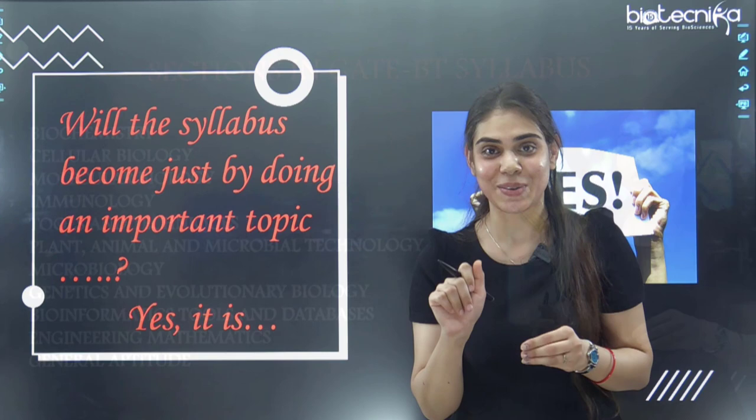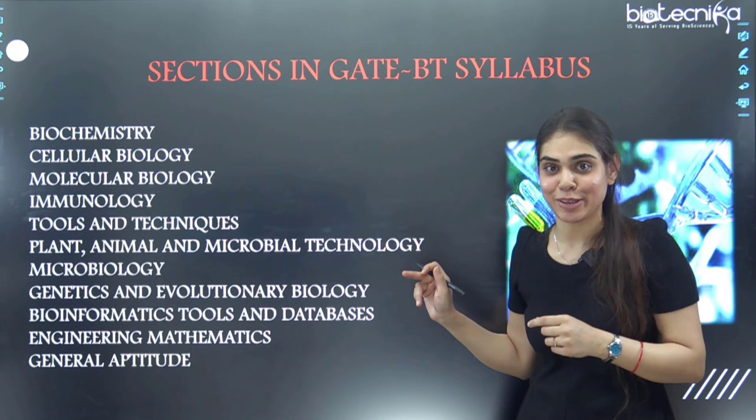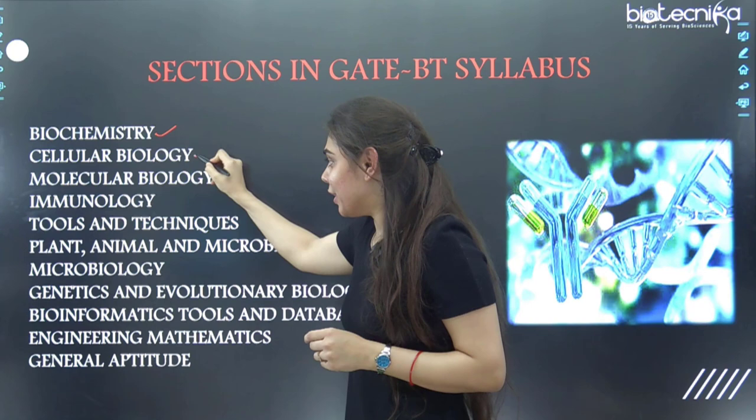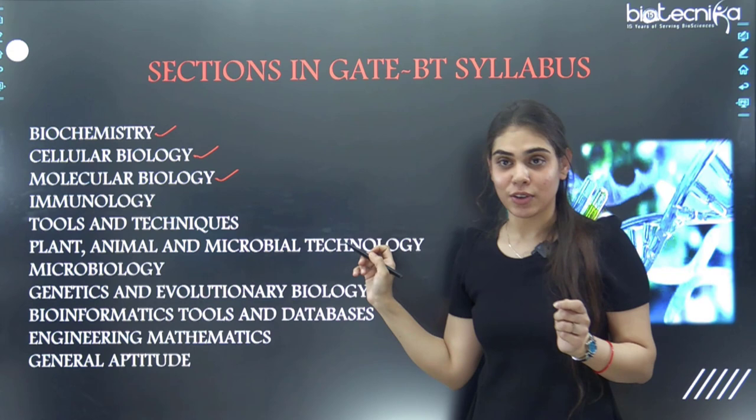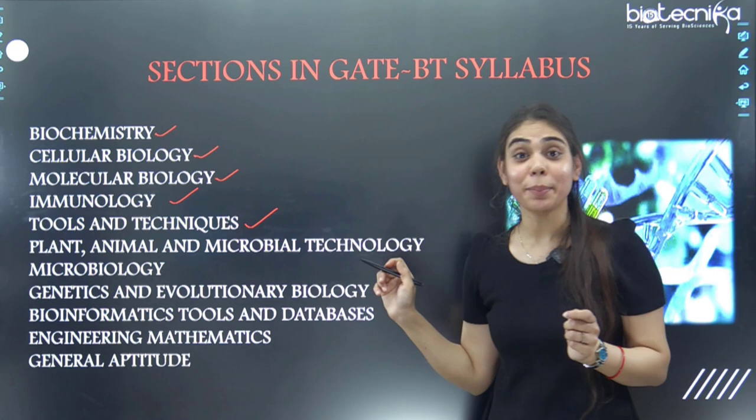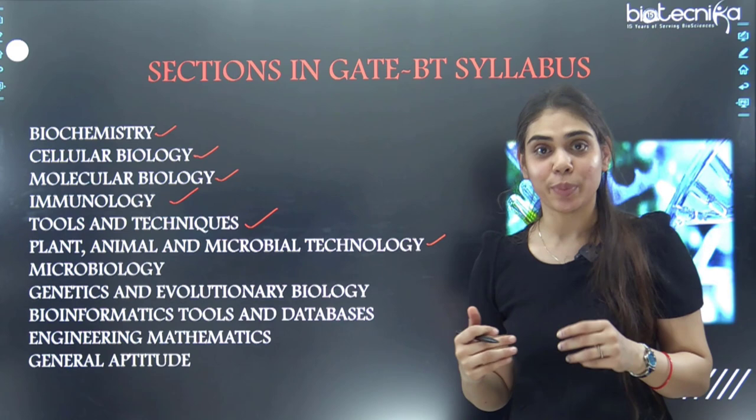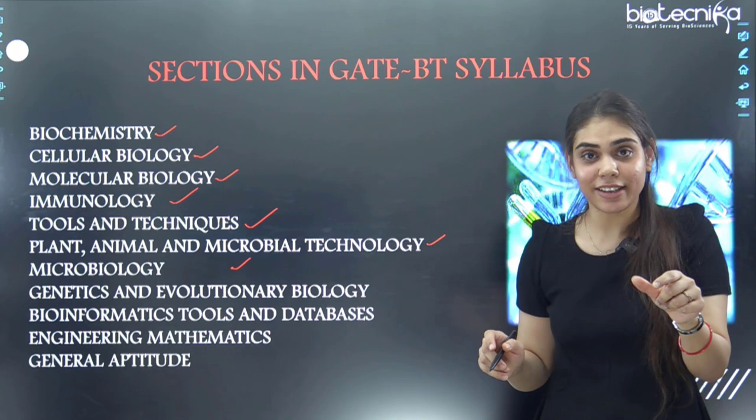The core sections are: firstly, biochemistry; next, cellular biology (cell biology); third, molecular biology; fourth, immunology; tools and techniques (methods in biology); then plant, animal and microbial technology together; next, microbiology; then genetics and evolutionary biology; bioinformatics tools and databases; engineering mathematics; and last, general aptitude.